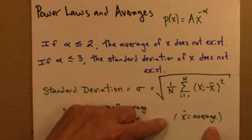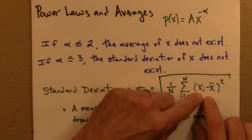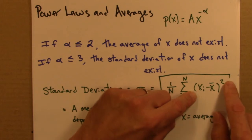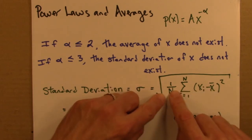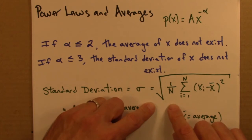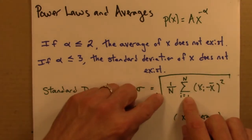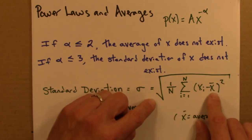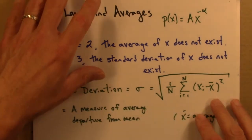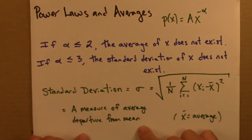x with a bar over it is the average x. This says, figure out how far each data point is from the average, square that, add those up, average, and take the square root. So it's the average of the square of the distances from the mean.